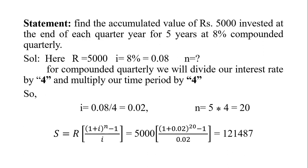Next statement: find the accumulated value of Rs. 5000 invested at the end of each quarter for five years at 8% compounded quarterly. For quarters, i will be divided by 4 and n will be multiplied by 4 because we have four quarters in a single year.